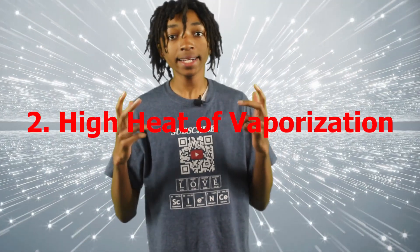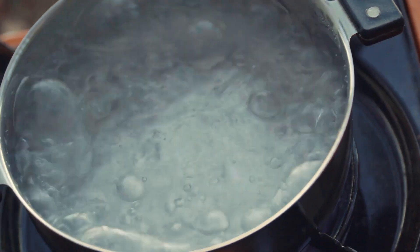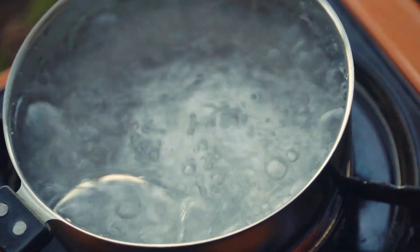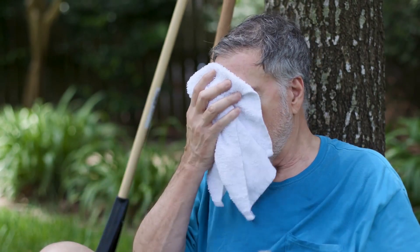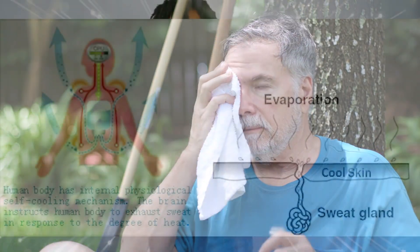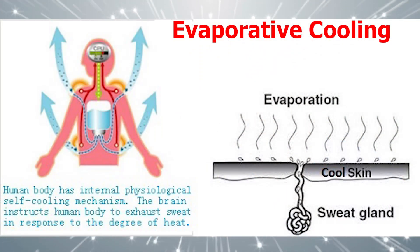Number two: water has a high heat of vaporization. It takes a lot of energy to convert liquid H2O into vapor. You see this when you boil water on the stove — the pot heats up quickly, but it takes quite a bit of time for the water to start boiling. When water evaporates, it produces a cooling effect, so some organisms sweat or pant to cool off when they are too warm. This effect is called evaporative cooling. If this water property didn't exist, your body would overheat and die, and the Earth would overheat.